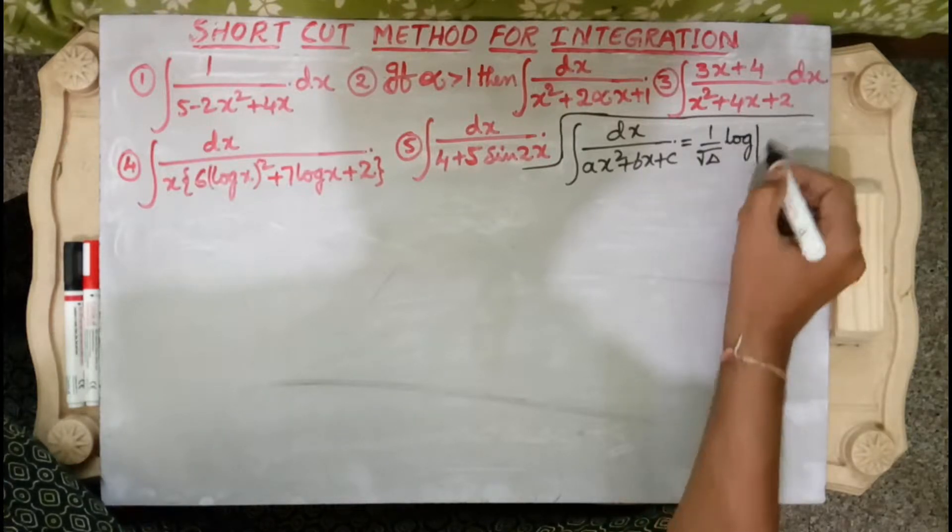The first problem is: integral of 1 by (5 minus 2x² plus 4x) dx, which we rewrite as integral of 1 by (minus 2x² plus 4x plus 5) dx. So here a equals minus 2, b equals 4, and c equals 5. We expect delta greater than 0.